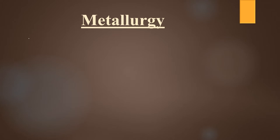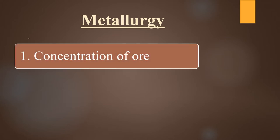Metallurgy is a process for the isolation of metals from their ores. It is a scientific or technological process. The metallurgy of a metal involves three steps for the isolation of a pure metal. The first step is concentration of ore — it means the removal of impurities from the ore.